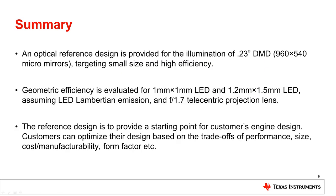In summary, we provided an optical reference design for the illumination of a 0.23 inch, 17 degree tilt DMD, targeting small size and high efficiency for a 1 mm by 1 mm LED. Assuming an F1.7 telecentric projection lens, high geometric efficiency is achieved at 71%. The efficiency for the 1.2 mm by 1.5 mm LED is also evaluated, and the result shows higher brightness can be achieved with this larger LED. This reference design is to provide a starting point for customers' engine design, based on which designers can make their own trade-offs between performance, size, cost, etc.